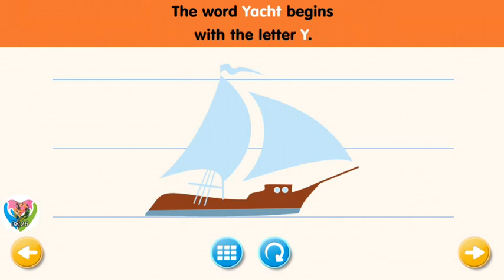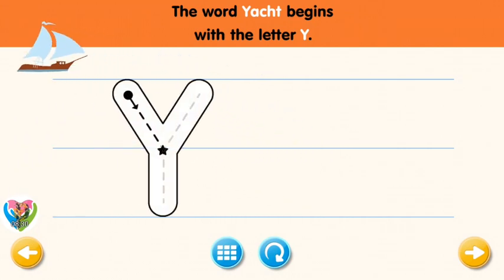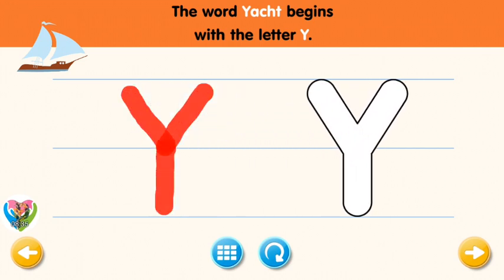The word yacht begins with the letter Y. Trace the letter Y. Connect the dot and the star with a line. Excellent! Now write the letter Y yourself.